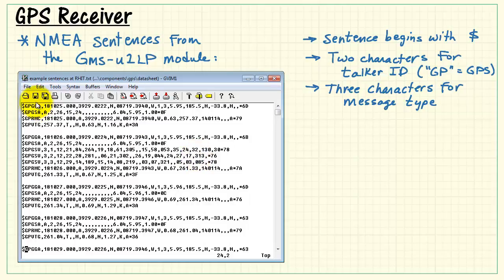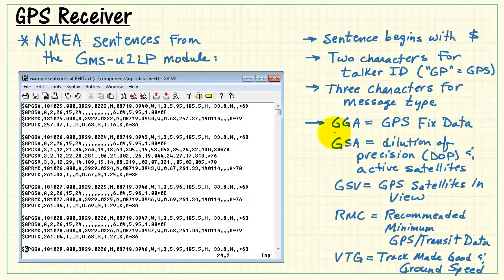The first two characters are called the talker ID, GP for GPS. Then we have three characters to designate the message type. As we look at these clusters, typically they contain four types of messages, and then occasionally it will emit a fifth type of message here. The five types of messages that are potentially emitted are GGA, for GPS fixed data. GSA, which indicates essentially the precision that you have in your measurement, as well as active satellites. GSV is GPS satellites in view. RMC is recommended minimum navigation data. And VTG stands for track made good and ground speed.